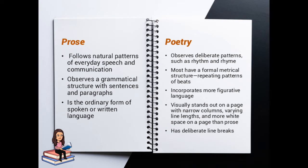What is prose and what is poetry, and how do they compare with one another? Prose follows natural patterns of everyday speech and communication, observing a grammatical structure with sentences and paragraphs — it is the ordinary form of spoken or written language. On the other hand, poetry observes deliberate patterns such as rhythm and rhyme. Most have a formal metrical structure, meaning repeating patterns of beats. Poetry also incorporates more figurative language, and is visually distinct on a page with narrow columns, varying line length, and more white space than prose.